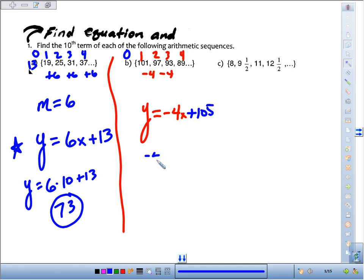The 10th term, then, we take negative 4 times 10 is negative 40, plus 105 is going to be 65.